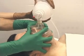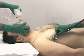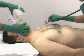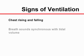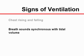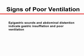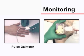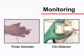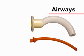Regardless of the technique used to ventilate the patient with a face mask, adequate ventilation can be assessed by inspecting and auscultating the chest and abdomen. The chest rising and falling and breath sounds synchronous with the delivered tidal volume suggest adequate ventilation. Gurgling epigastric sounds and tympanic abdominal distension indicate gastric insufflation and poor ventilation. Other monitoring tools such as pulse oximetry and a carbon dioxide detector can be very valuable.